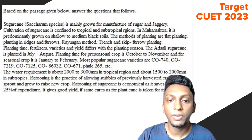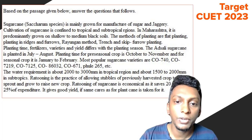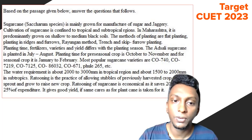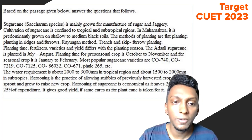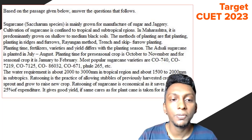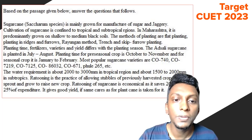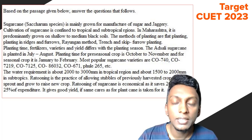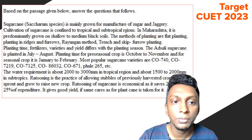Ratooning is the practice of allowing stubbles of a previously harvested crop to sprout and grow to raise a new crop. Ratooning of sugarcane is economical as it saves 20 to 25% of expenditure. It gives good yield if the same care as for plant cane is taken.